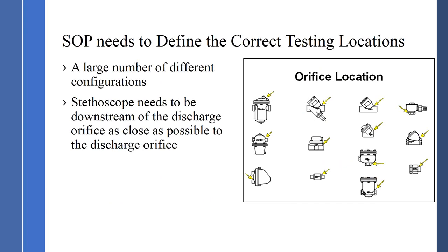The SOP goes through the different configurations of steam traps and where to place the stethoscope module when testing. You want to be downstream of the discharge orifice — that's where the highest degree of ultrasound is generated and where you want to be testing. The team should carry sample diagrams with them so when they walk up to a steam trap they can identify it as inverted bucket mechanical, float thermostatic, thermodynamic thermostatic, bimetallic thermostatic, or bellows thermostatic, and know where to put the stethoscope module.